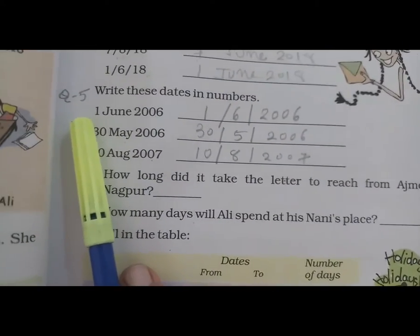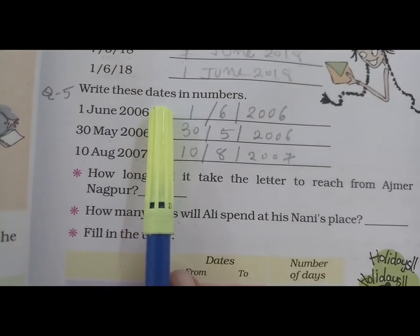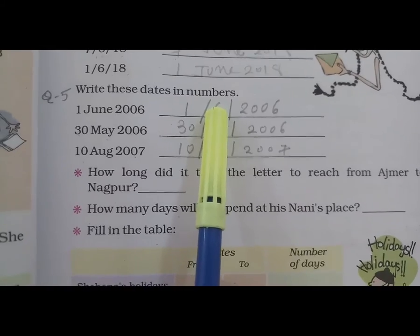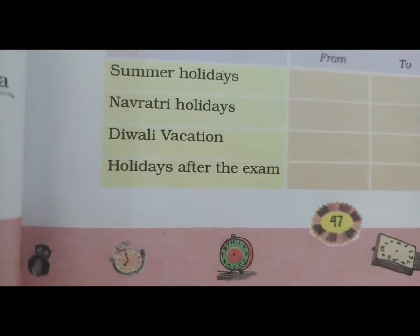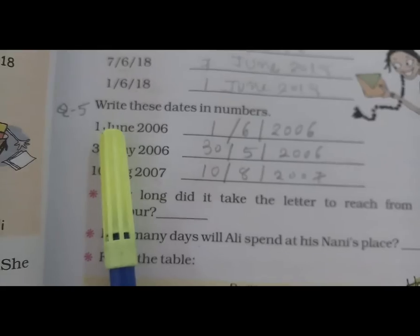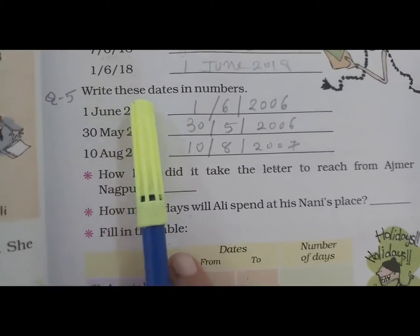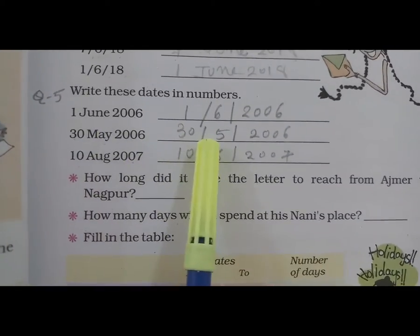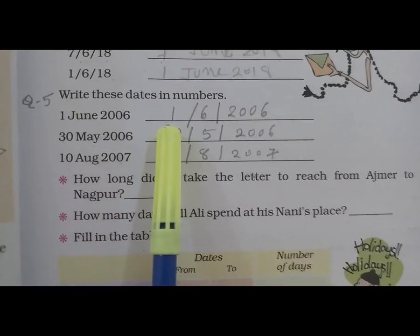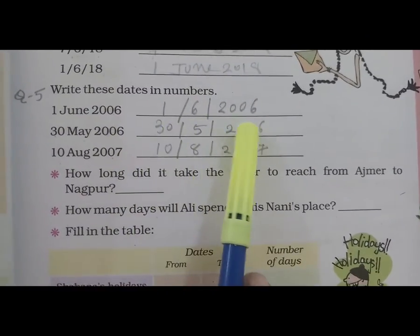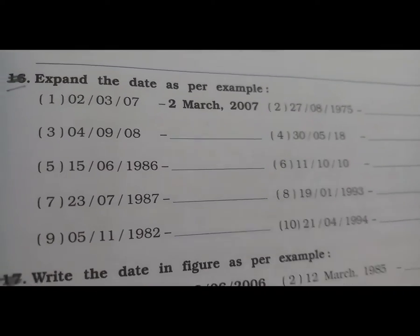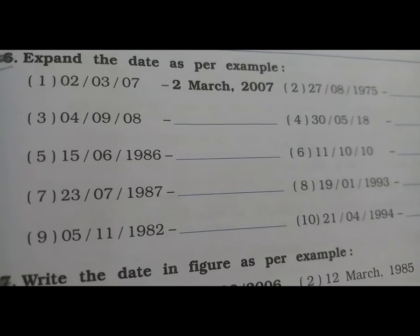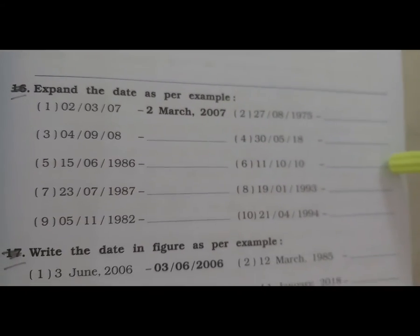Question 5: Write these dates in numbers. वो भी textbook के page number 47 पर है. वो भी मैंने आपको आगे सिखा दिया है — 1st June 2006 को हम ऐसे लिखेंगे. Date को हम number में लिखेंगे, आपको practice के लिए मैं दे रही हूँ. See here — इस तरह से आपको यह करना है.